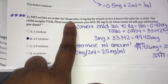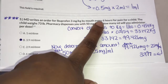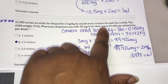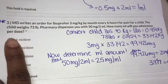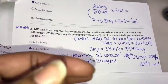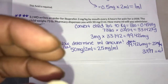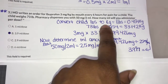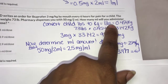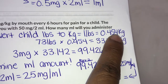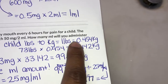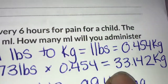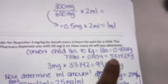Question three: the MD writes an order for ibuprofen 3 mg/kg by mouth every six hours for pain for a child. The child weighs 73 pounds. Pharmacy dispenses you 50 mg per 2 ml. How many mls will you administer per dose? The first thing you want to do is convert the child's weight to kilograms. One pound equals 0.454 kilograms, so you do 73 times 0.454 and you get approximately 33.142 kg.